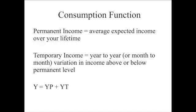In the Friedman theory of consumption, your choice about how much to consume depends on two types of income. We split income Y into two parts: permanent income, which we denote Y with a superscript P, and transitory or temporary income, which we denote Y with a superscript T.